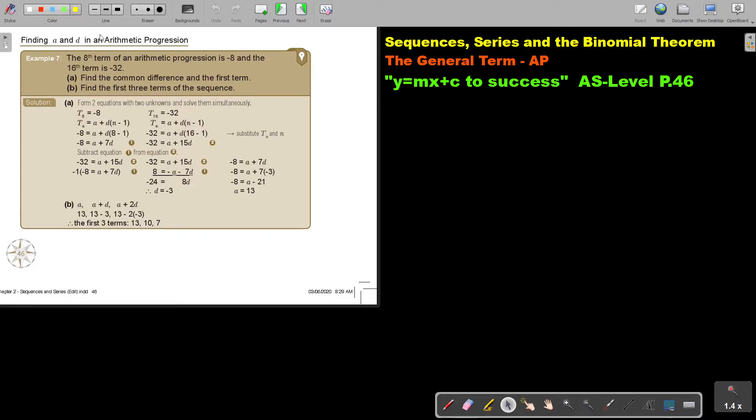Finding A and D in an arithmetic progression. The 8th term of an arithmetic progression is negative 8 and the 16th term is negative 32. Find the common difference and the first term. Form two equations and two unknowns and solve them simultaneously.